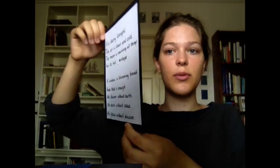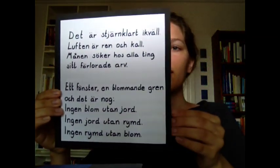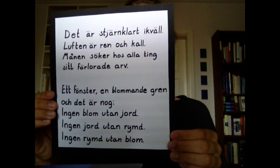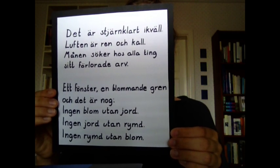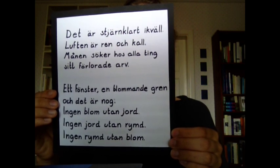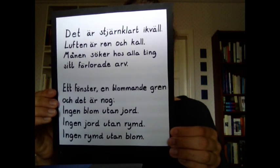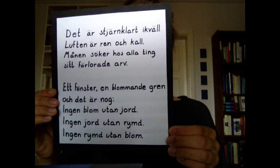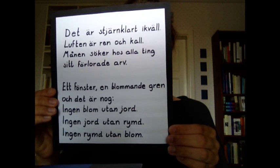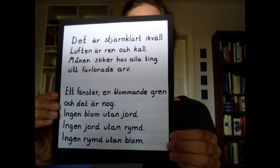So I'm going to read the poem through in Swedish. Det är färnklart ikväll. Luften är ren och kall. Månen söker hos alla ting. Sitt förlorade arv. Ett fönster, en blommande gren. Och det är nog. Ingen blomm utan jord. Ingen jord utan rymd. Ingen rymd utan blomm. Thank you.